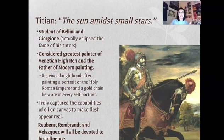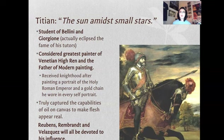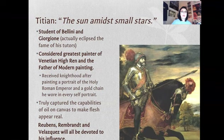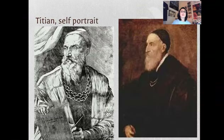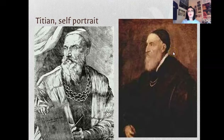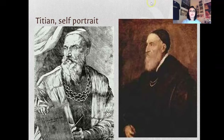Titian was given a knighthood and a gold chain from the Holy Roman Emperor, which he wears in all his self-portraits as a way to brag. We can identify his portrait of Emperor Charles V because Charles had a massive chin — it was a family trait. They said Titian could make flesh appear to come to life through his use of oils, and he was obsessed with using red and black. In his self-portraits you can see that gold chain he received as thanks for how lifelike he made Charles appear.